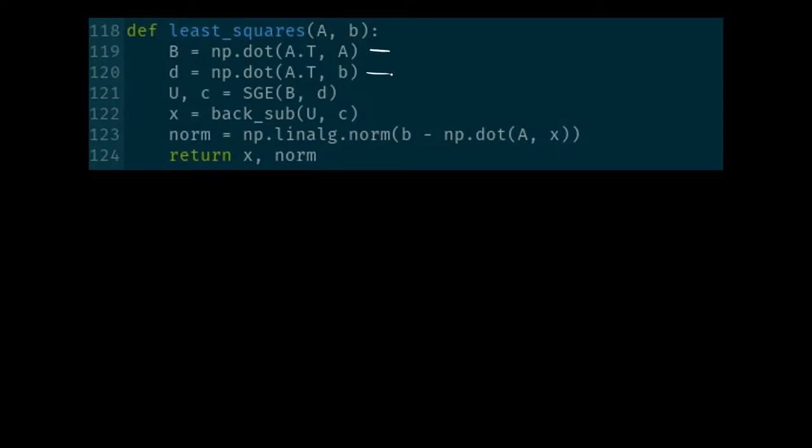In lines 119 and 120, we are going about computing A transpose A and A transpose B. Then in lines 21 and 22, we are solving via our conventional methodology of structured Gaussian elimination paired with back substitution.